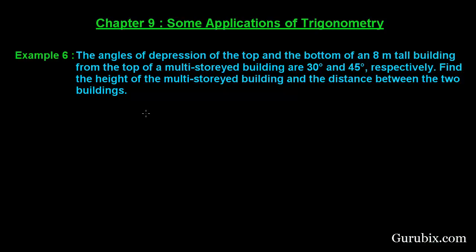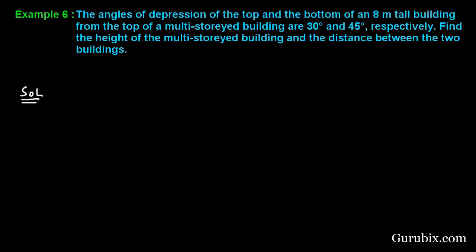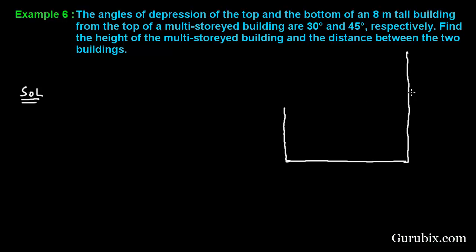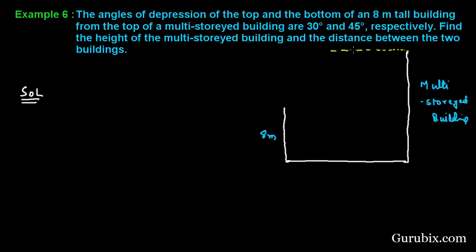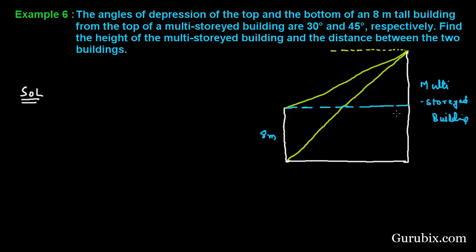Let us see how to solve this example by drawing a rough figure of the information given in the question. Suppose this is the ground, here we have a tall building which is 8 meters high, and here we have a multi-story building. For the angle of depression, we have to draw a horizontal level from the top of the multi-story building.